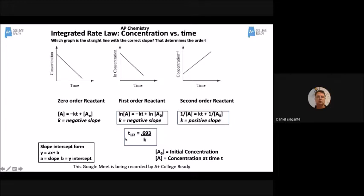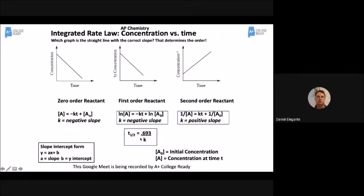For a first-order reaction, the half-life is always constant. This is the equation for half-life for a first-order reaction, so sometimes they'll say here's the half-life, find K — use the equation and drop it in. The half-life for zeroth order and second order is not constant; those half-lives change with concentration change. The first-order half-life equation is on the equation sheet.